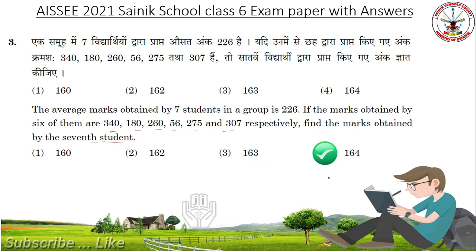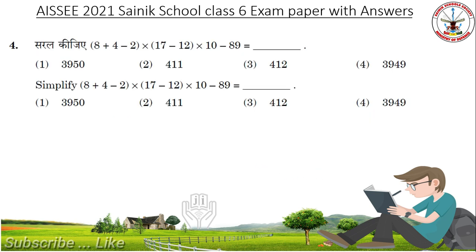Option 4. Simplify 8 plus 4 minus 2 into 17 minus 2 into 10 minus 89. What is the answer? Answer: 411.